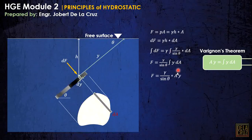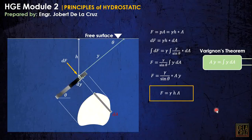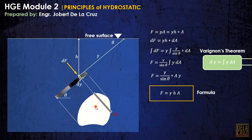Substituting, we get F equals gamma times (ȳ/sin θ) times A times ȳ, and ȳ over sine of theta can be expressed as h̄ (H-bar). So the formula for hydrostatic force is F = γh̄A. Take note this applies when there is only a single liquid. The key principle to memorize is: the force equals the pressure at the centroid of the area times the area.